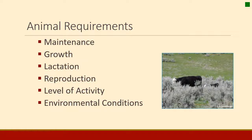The categories include maintenance, growth, lactation, reproduction, and activity. Environmental conditions can also influence how much energy or nutrients animals need. We're going to go through each of these individually, so let's start with maintenance.